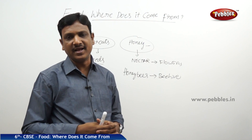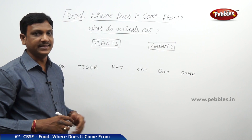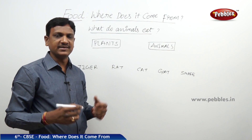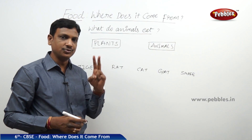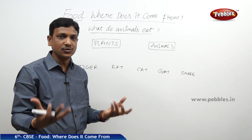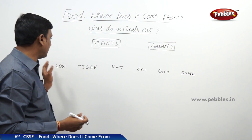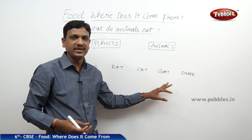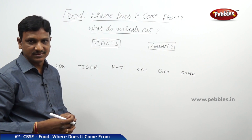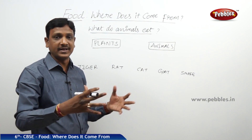Now let us see animals and their food. What do animals eat? We discussed that food is available in nature, obtained from two sources — plants and animals — whether for animals or for humans. Here I have a list of animals. For these animals, food is obtained from either plants or animals, but they have some choices.